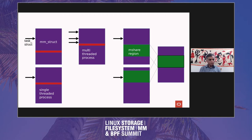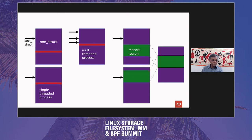And then the third process, the multi-threaded process, also maps it with M-Share. The difference here is that if the first process calls mprotect to make it read-only, it will still see the modifications from the other processes. But if the multi-threaded process calls mprotect, all three of those threads will not be able to write to it. So the other processes are deciding for themselves what their protections are, but one thread in the multi-threaded process can decide for all of the others, because they're all sharing the same area.